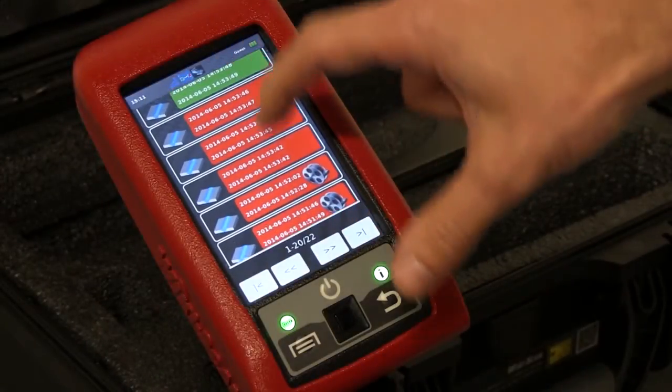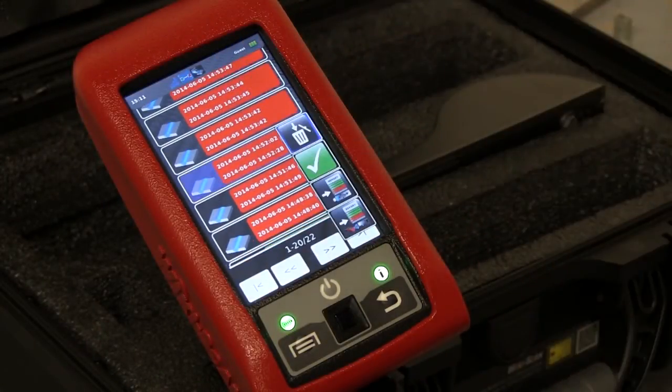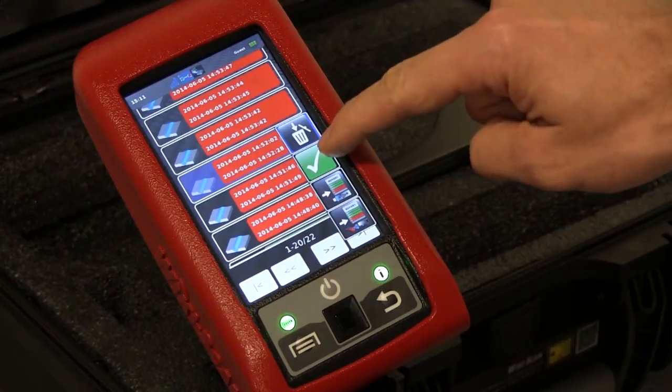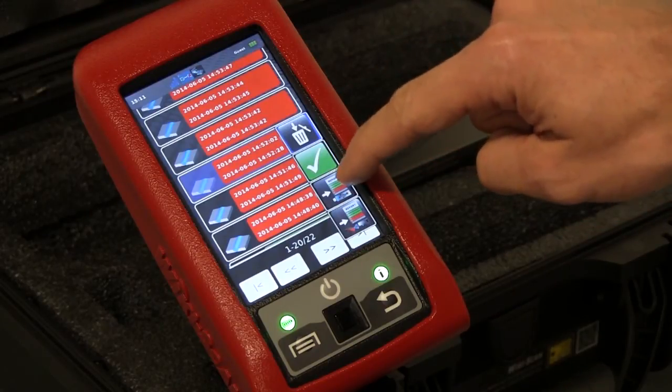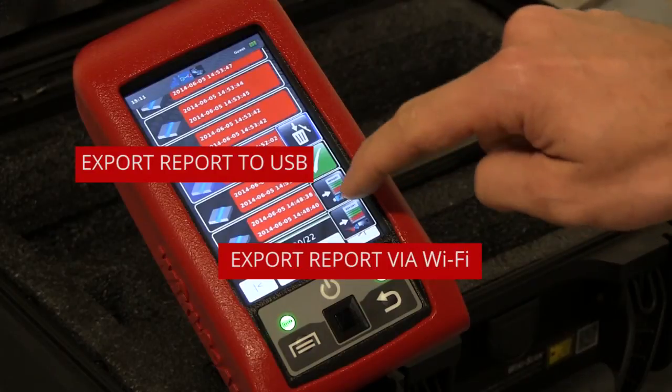The results can be reviewed and exported to the Wikiscan inspection report file, an Excel-based spreadsheet that can be transferred from the Wikiscan via USB or Wi-Fi connections.